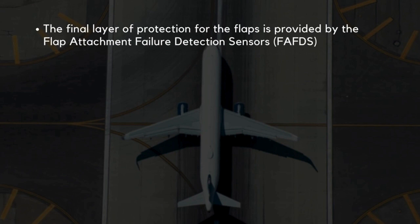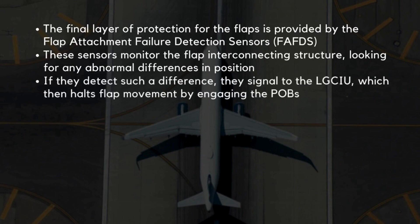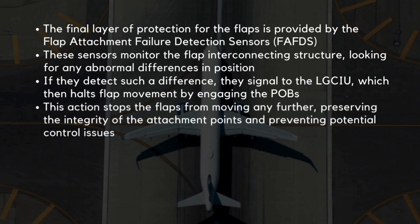The final layer of protection for the flaps is provided by the flap attachment failure detection sensors. These sensors monitor the flap interconnecting structure, looking for any abnormal differences in position. If they detect such a difference, they signal to the LGCIU, which then halts flap movement by engaging the pressure-off brakes. This action stops the flaps from moving any further, preserving the integrity of the attachment points and preventing potential control issues.